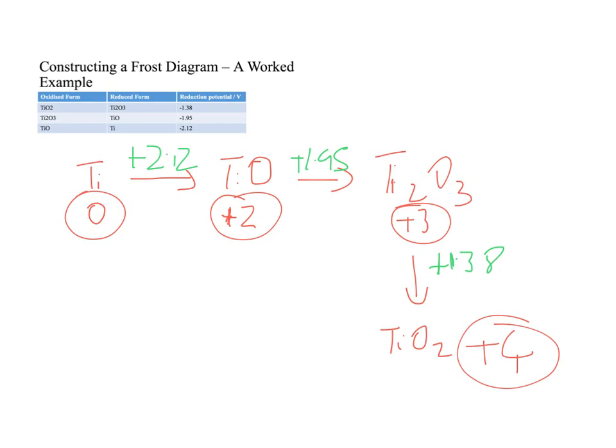The subtlety with this first step is that n equals 2. This is a two-electron process.